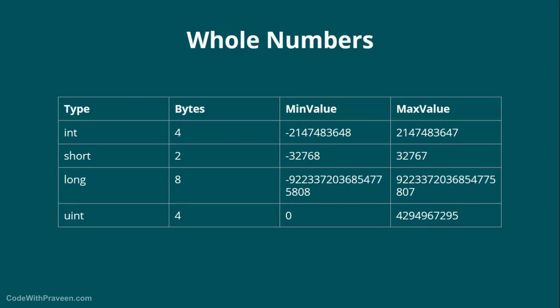We will see how to use these different variable types in our demo. The type of variable you choose depends on your context and programming task. For example, if you just have a zip code that fits within a short range, you can consider using short. If you're tracking employee IDs that require a bigger range, you can consider integer. It all depends on your requirement and the type of value you are going to save.